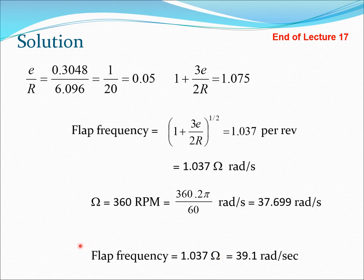The flap frequency of 39.1 rad/s for the offset hinge blade is slightly more than for a blade without any hinge offset. The offset hinge introduces mathematical complexity but has many beneficial effects in terms of blade controllability. A hinge is required in most cases for practical purposes. This ends lecture 17; the next lecture will discuss lag motion.